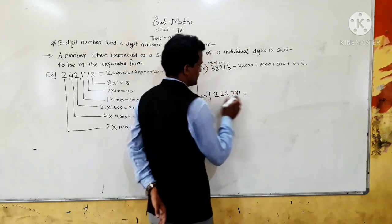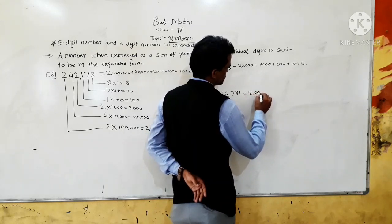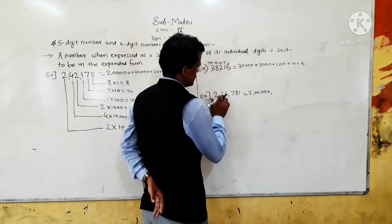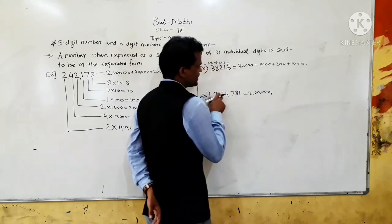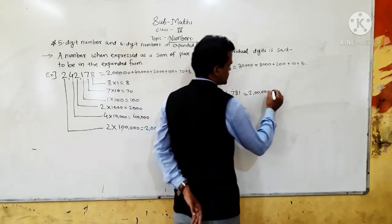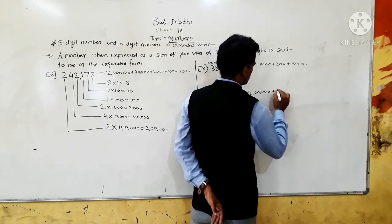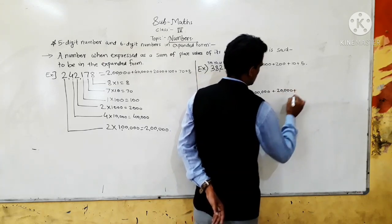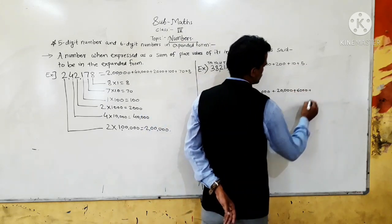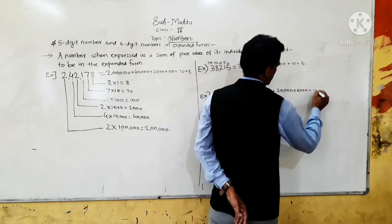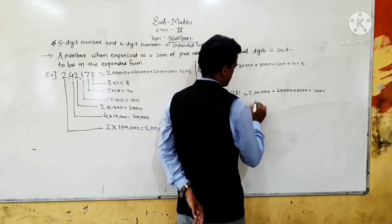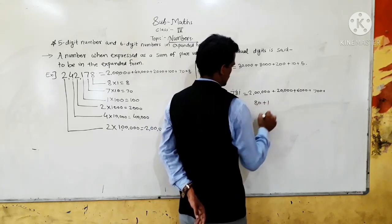Now for the next number, 226,781. The place value of the first 2 is 2,000. Then the place value of the second 2 — it comes at the ten-thousands place, so 2 × 10,000 = 20,000. Then the place value of 6 is 6,000 because it comes at the thousands place. Then 700, plus 80, plus 1.